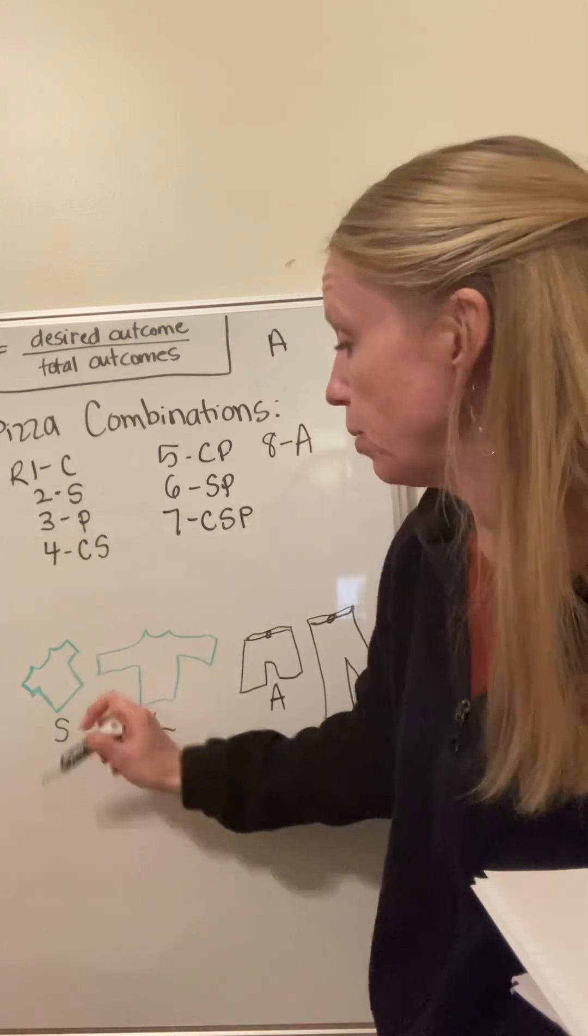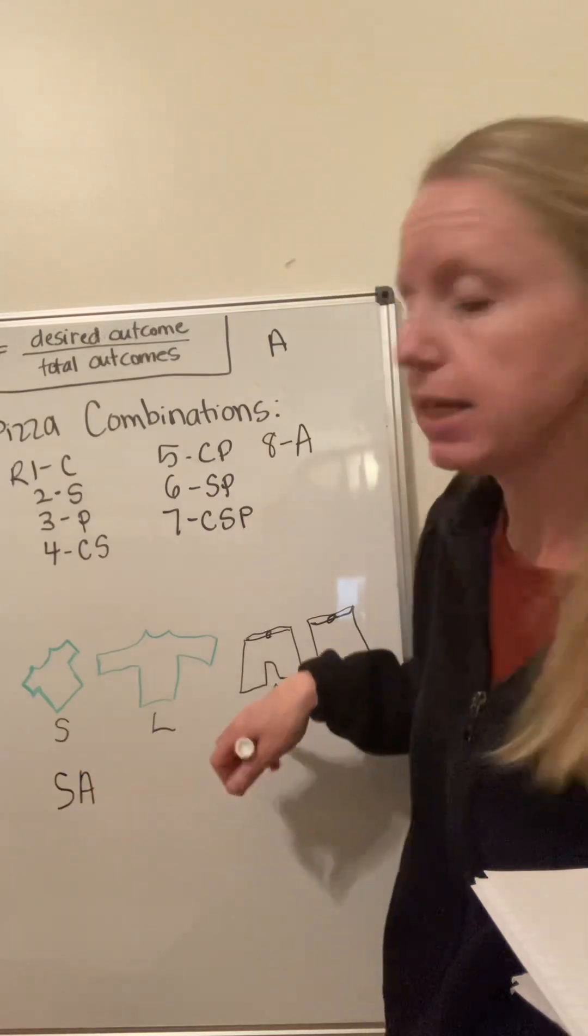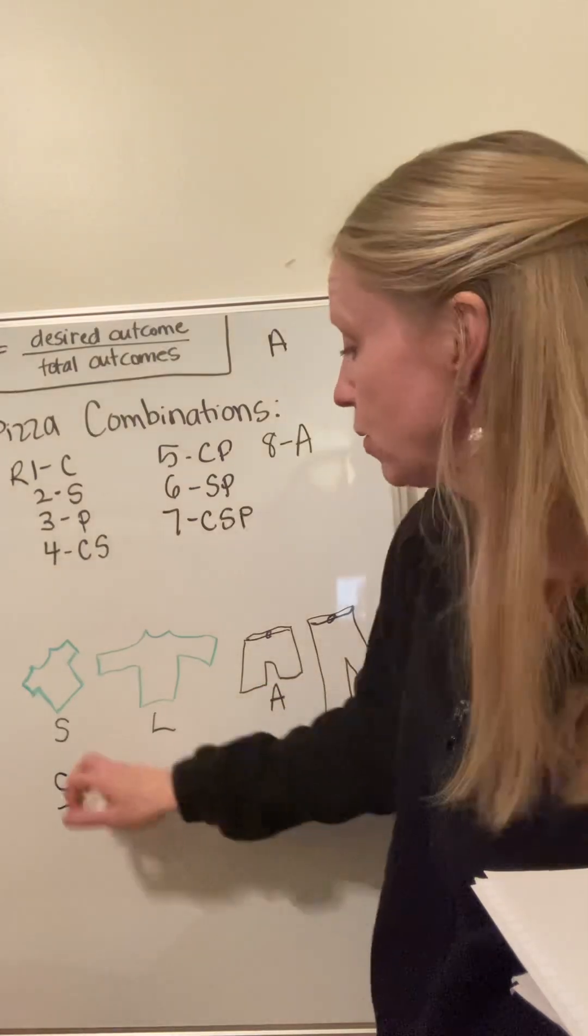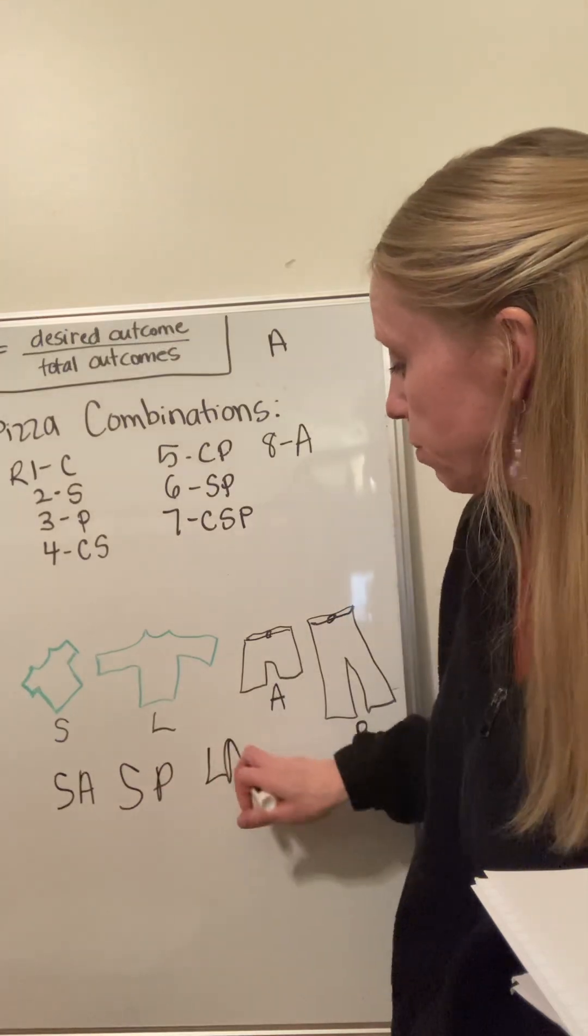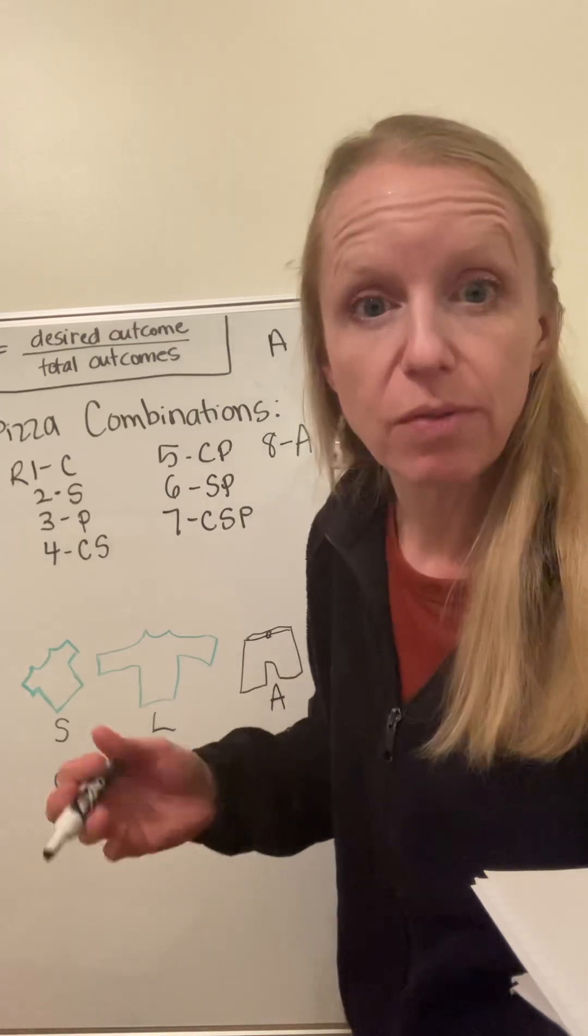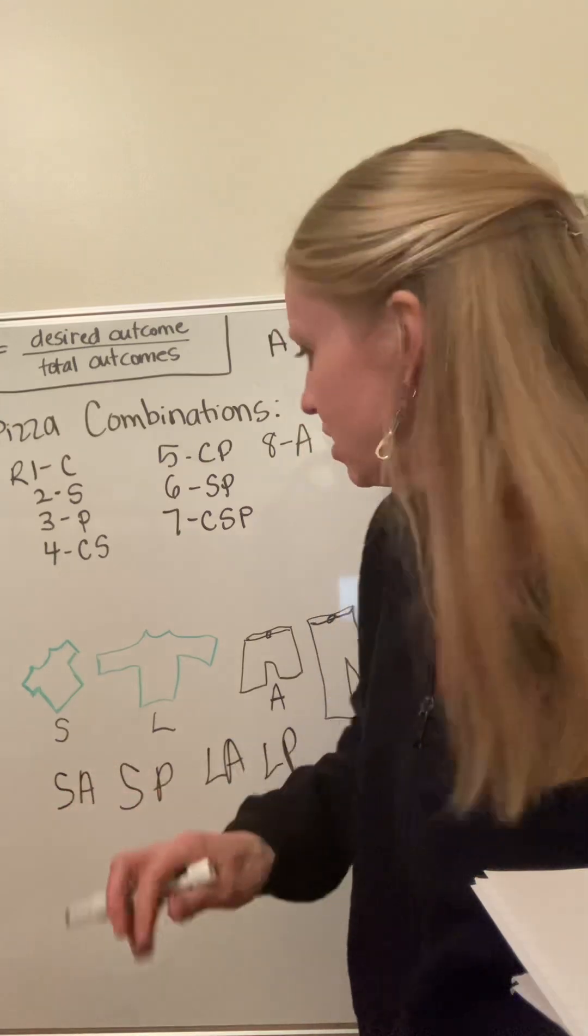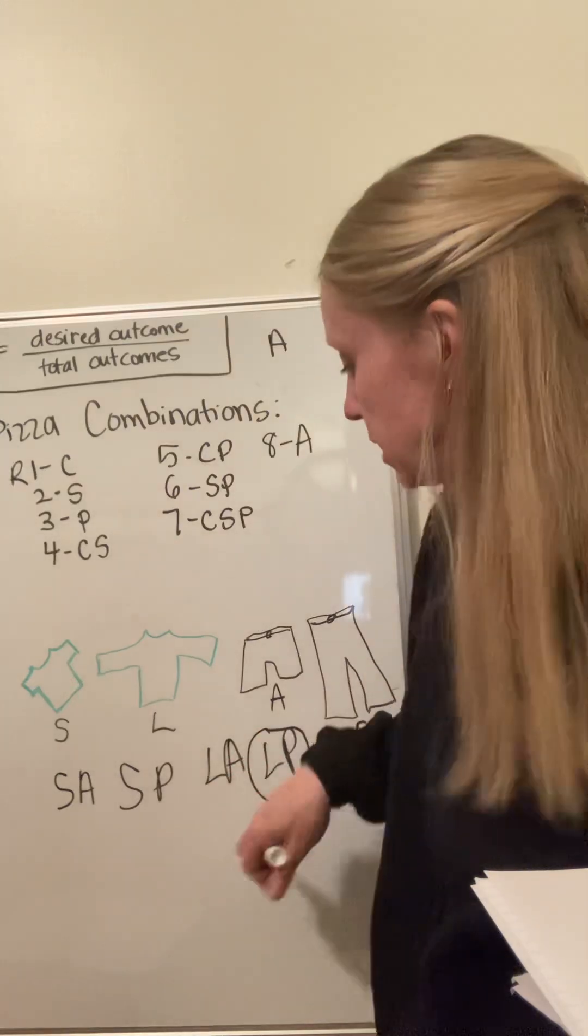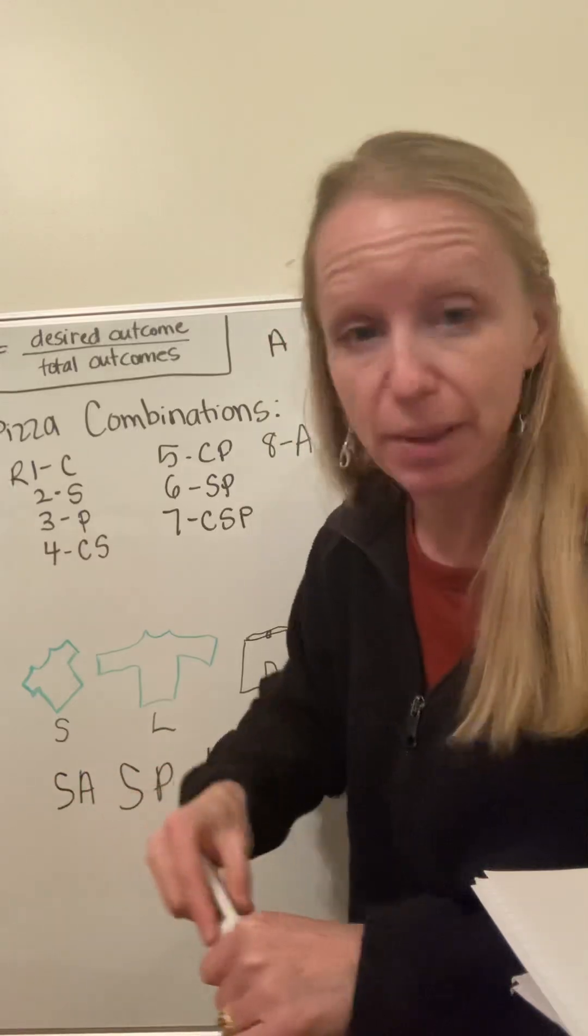Well, your possible options are short sleeve and athletic shorts, or I could get short sleeves and pants, or I could draw out the long sleeves with my athletic shorts, or the long sleeves with pants. So if it was a cold rainy day today, I'm going for the long sleeves and pants, and I have a one in four chance of just randomly drawing that out, the probability of that.